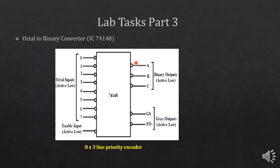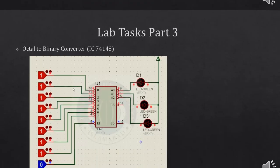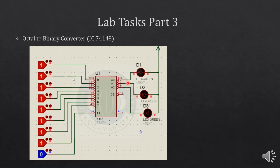One thing you need to take care of is that you have to connect the cathode terminal with these outputs and apply positive voltage at the anode terminal. As this IC is working on active low logic, I will share the circuit showing how to connect this IC with the LEDs. As shown in the circuit, the VCC voltage is connected with the anode terminal of the LED and the cathode terminal is connected with the output of the IC.